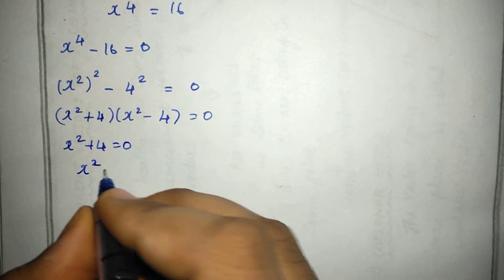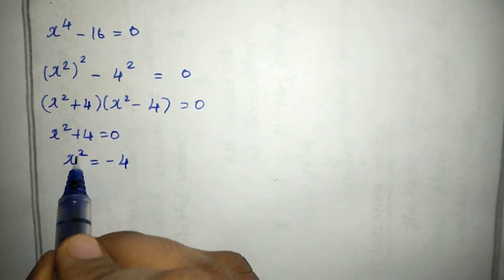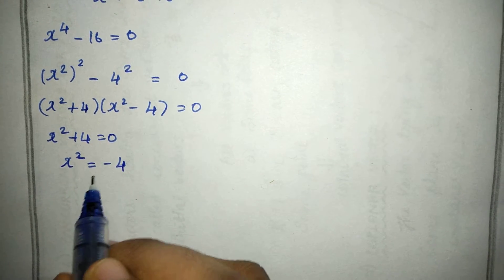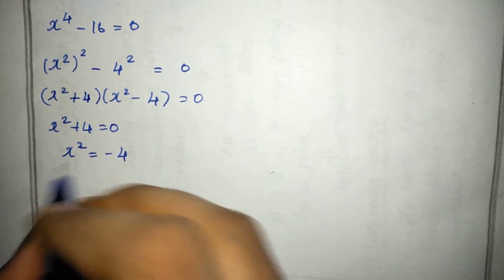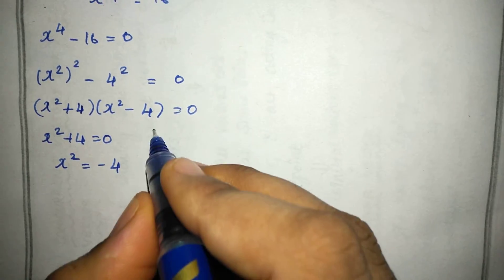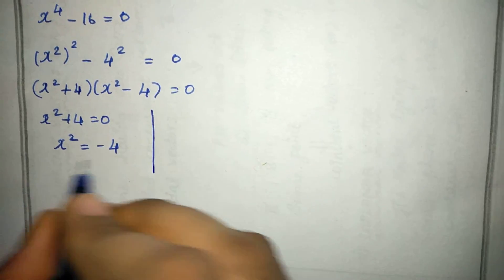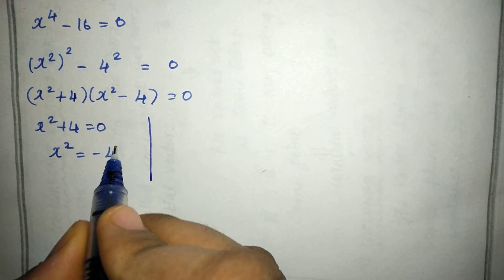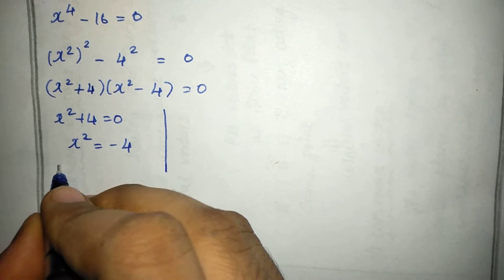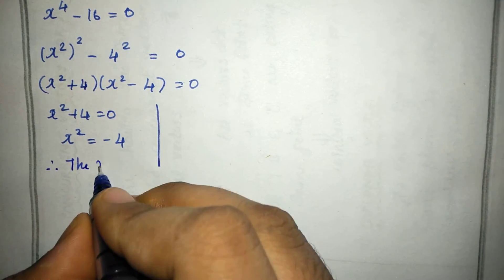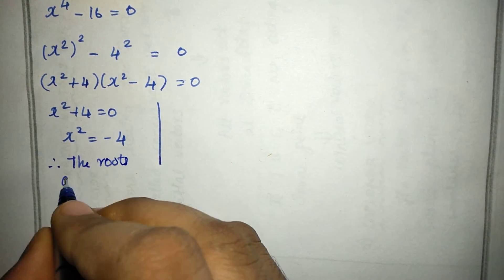Looking at the first factor, x² + 4 = 0 gives x² = −4. Taking the square root of −4 gives an imaginary result, so x² + 4 = 0 does not give real roots — the roots are imaginary.